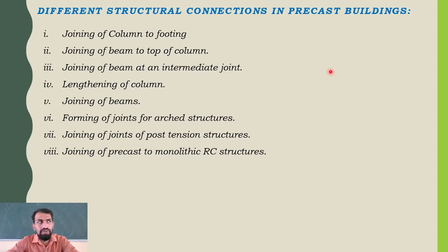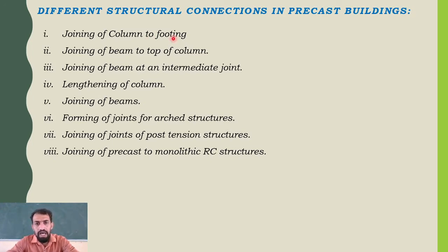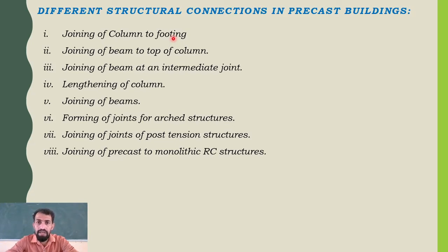The first one is joining of column to footing. In RCC structures, connections are made step upon step: first we lay the footing, then we take some part as a starter for column erection. There is a joint, but that joint gets hidden because both are in a fresh amount of concreting only.